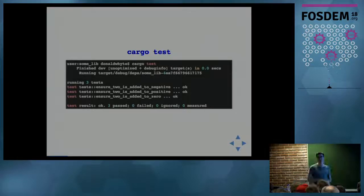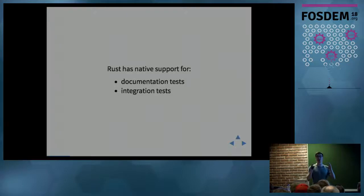Rust has native support for documentation tests, running tests that are actually example code in your documentation to make sure your example code and your library don't misalign, as well as integration tests. But the focus here is on unit tests and mocking.